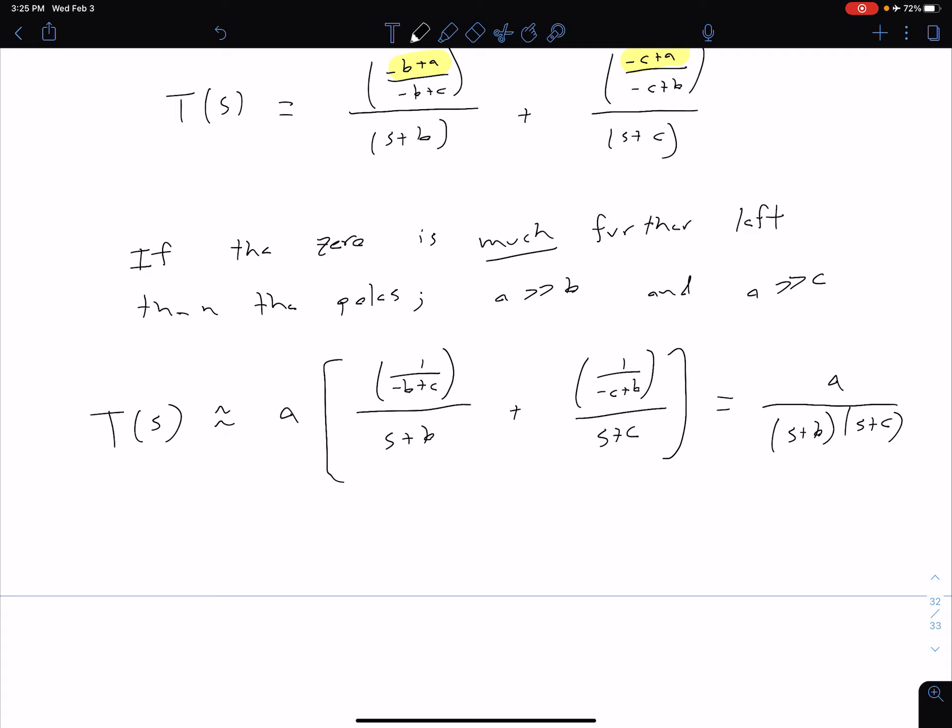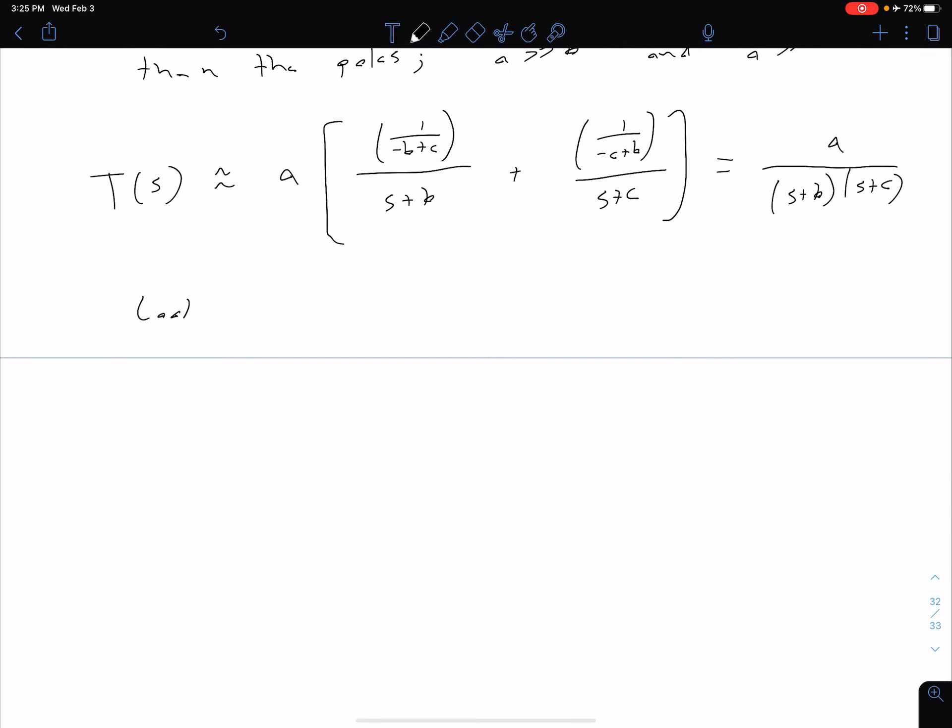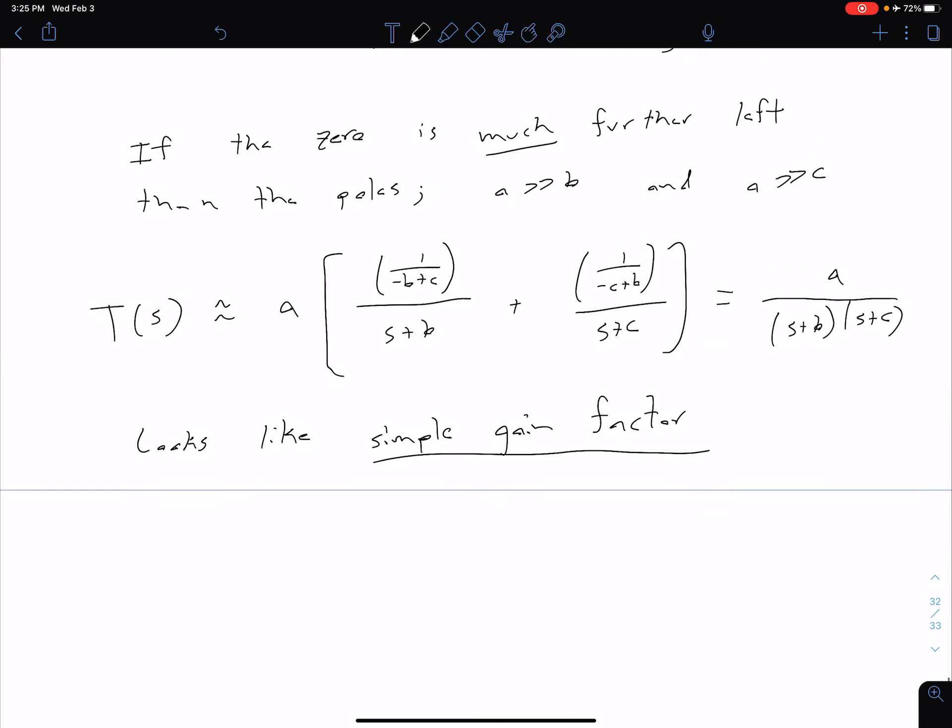So comparing that to what we would normally have if we didn't have a zero, this just looks like a simple gain factor. So in other words, it looks like we just came in here and said, well, let's multiply this transfer function with two poles by some value A.